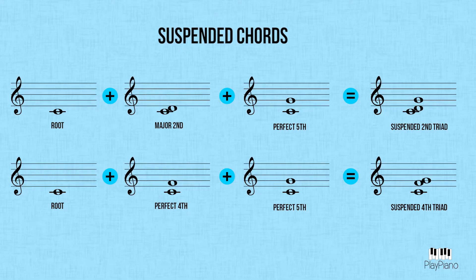Both fill-ins will resolve to the third. Until then, the sus2 and the sus4 serve wonderfully in suspense building, dramatic moments, or sultry ballads. If the root note of the chord is C, then a C sus2 would be spelled C, D, and G. A C sus4 would be spelled C, F, and G. Each of these spellings are missing the third, so just know that it is very important to resolve the suspended notes to the third of the next chord.